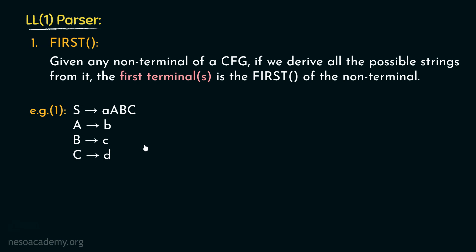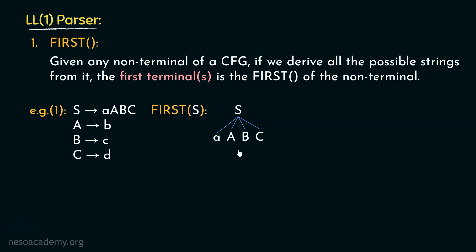This is a context-free grammar. S can be rewritten as small a, capital A, capital B, followed by capital C. Let's try to find out the first of S. From this particular production rule, from S we can derive this 'a' followed by capital A, capital B, capital C. This is the only string which can be derived from S according to this grammar. The first terminal in this particular string is the small 'a'. So the first of S is going to be this small 'a'. Given any non-terminal of a CFG, if we derive all possible strings from it, the first terminal is the first of the non-terminal.